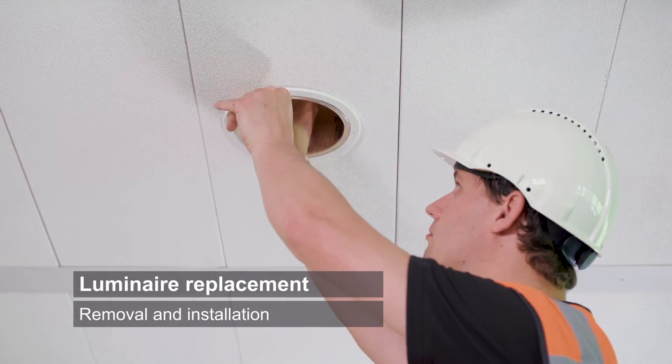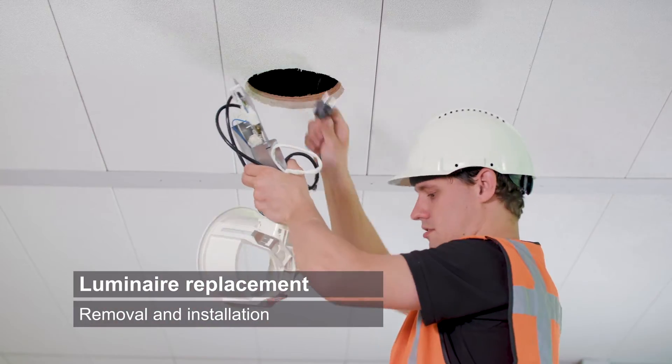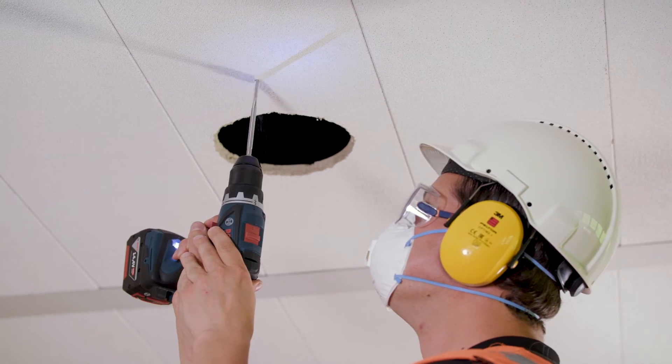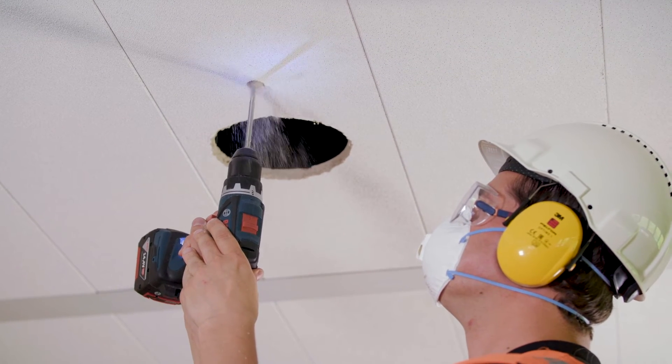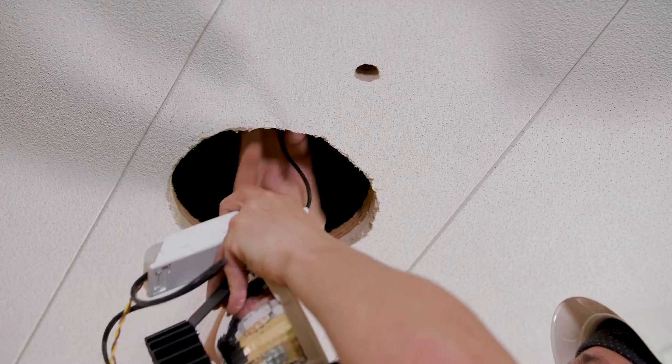Remove the existing downlight from the ceiling. Drill a 20 millimeter hole next to the downlight for the LEDCODE BLE radio placement.